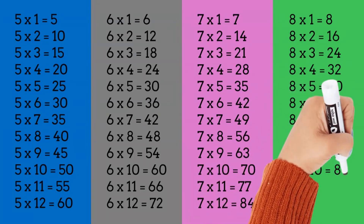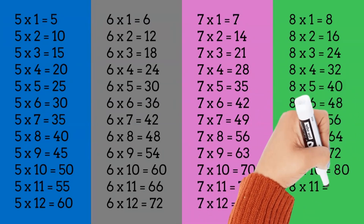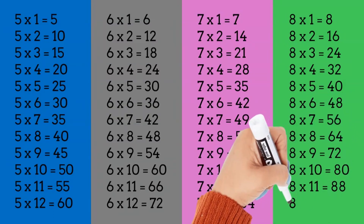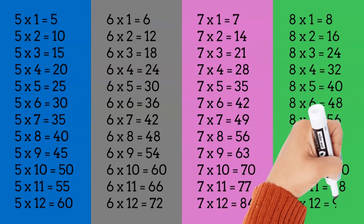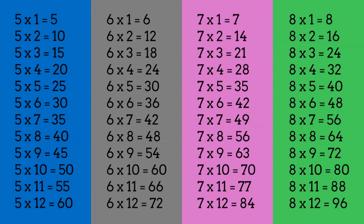8 times 10 is equal to 80. 8 times 11 is equal to 88. 8 times 12 is equal to 96. Good job power kids! Subscribe and see you on the next video!